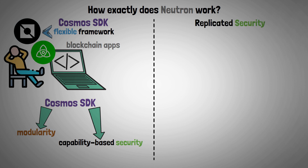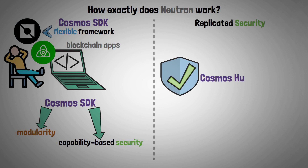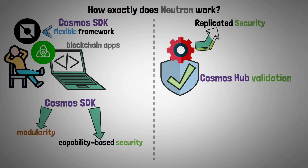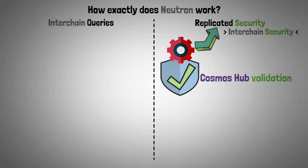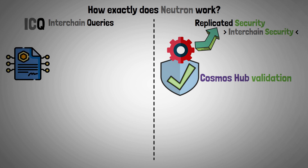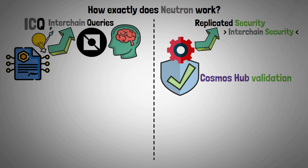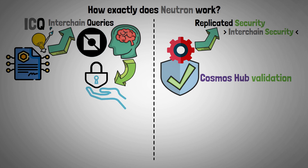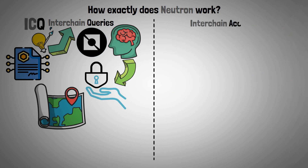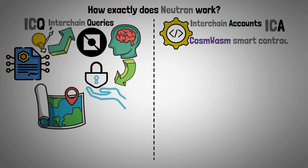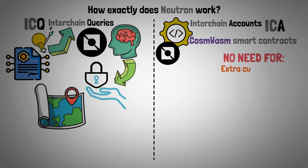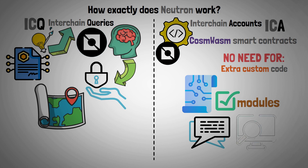Replicated security: Neutron can secure itself using the Cosmos Hub validation set, thanks to a technology called replicated security — or previously, inter-chain security. Inter-chain queries (ICQ): Smart contract developers can customize the inter-chain queries technology that Neutron incorporates. This is one essential component that lets developers safely access data from distant locations. Inter-chain accounts (ICA): Inter-chain accounts are being integrated into Cosmos smart contracts by Neutron. Without requiring the deployment of extra custom code, ICA enables modules and smart contracts to communicate with and monitor transactions in other chains.